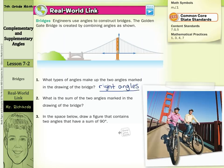What is the sum of the two angles marked in the drawing on the bridge? Well, if this right angle here is 90 degrees, and it is, and this right angle here is 90 degrees and it is, 90 plus 90 gets us 180 degrees.